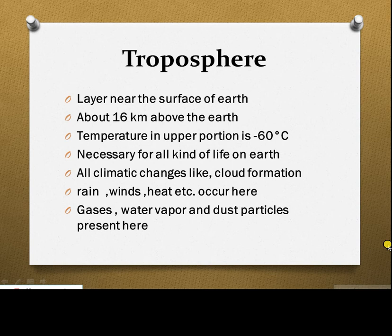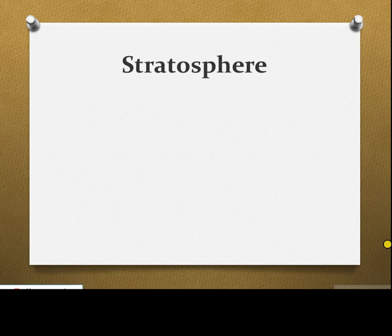As we go up from sea level, the temperature decreases with altitude. At the boundary of the troposphere, it reaches minus 60 degrees centigrade. The next layer is the stratosphere.